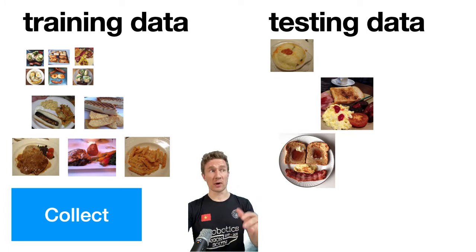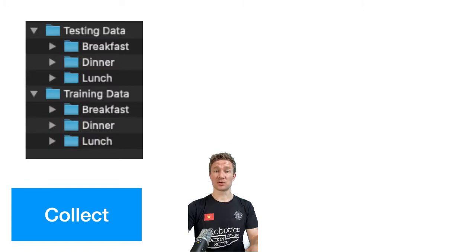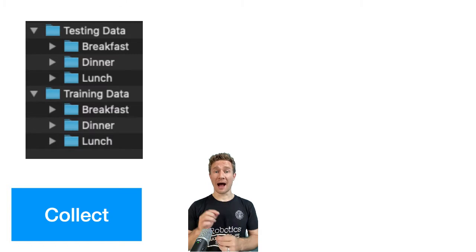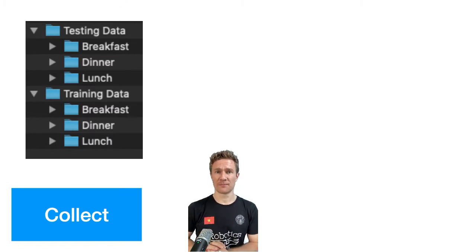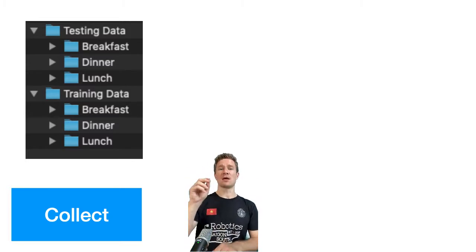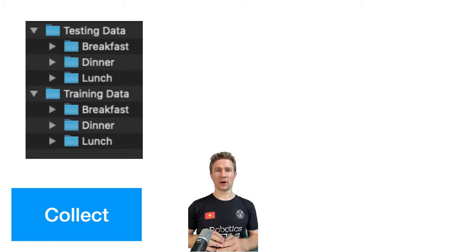That's all part of the process of training the algorithm. We had to collect our data first, and that's why our first day was all about collecting. Today we're going to talk more about the details of training. What you should have done last time was create a folder with one section for your training data for your categories — I'm doing breakfast, lunch, and dinner, so I have those three folders. You should have 60 pictures as training data and 15 photos as testing data.